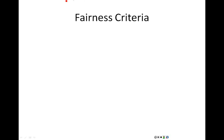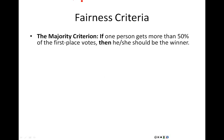The first criteria is called the majority criterion. The majority criterion says that if one person gets more than 50% of the first place votes, then he or she should be the winner. If more than half of the people wanted them as their first place person, that only seems fair.